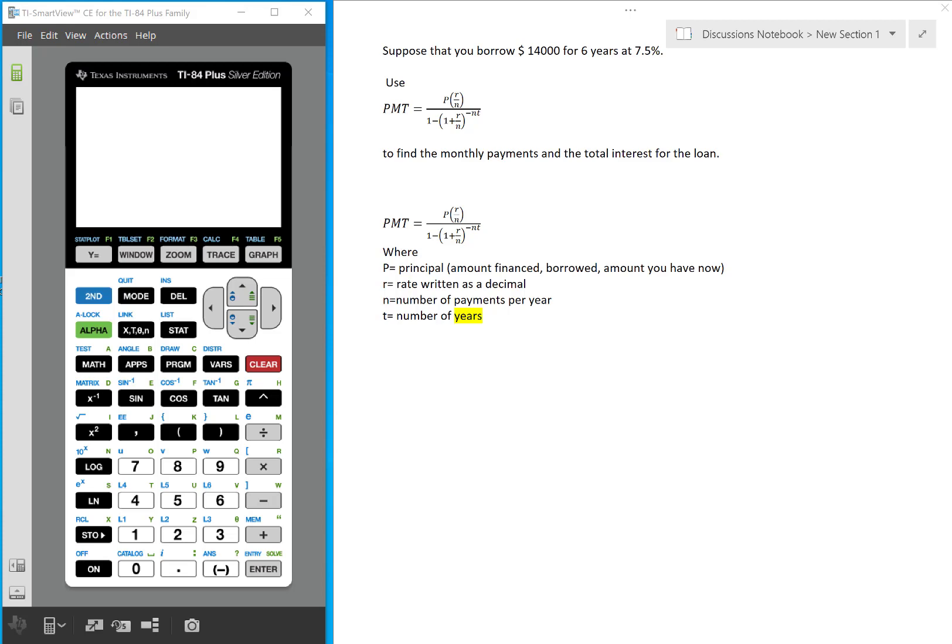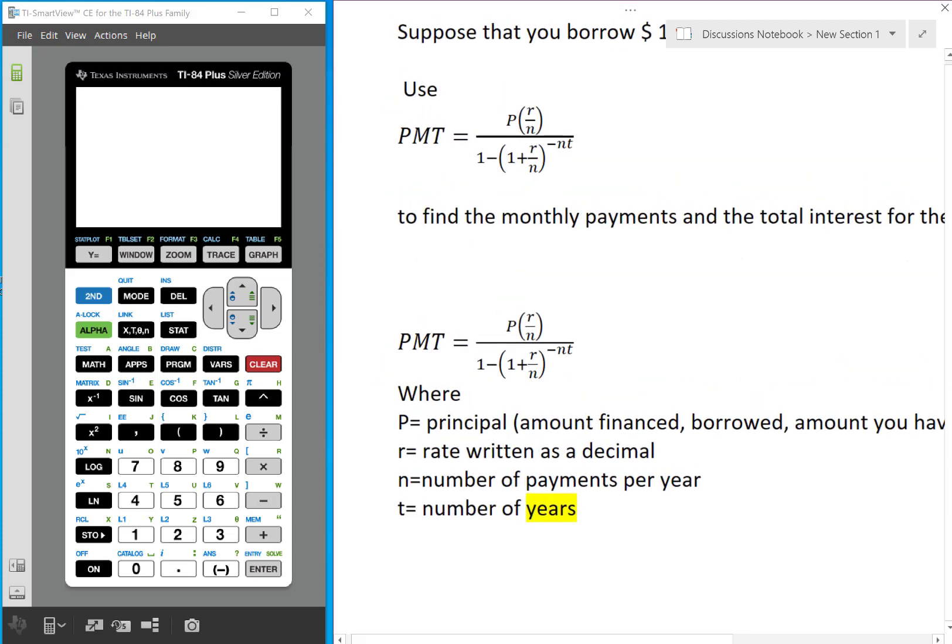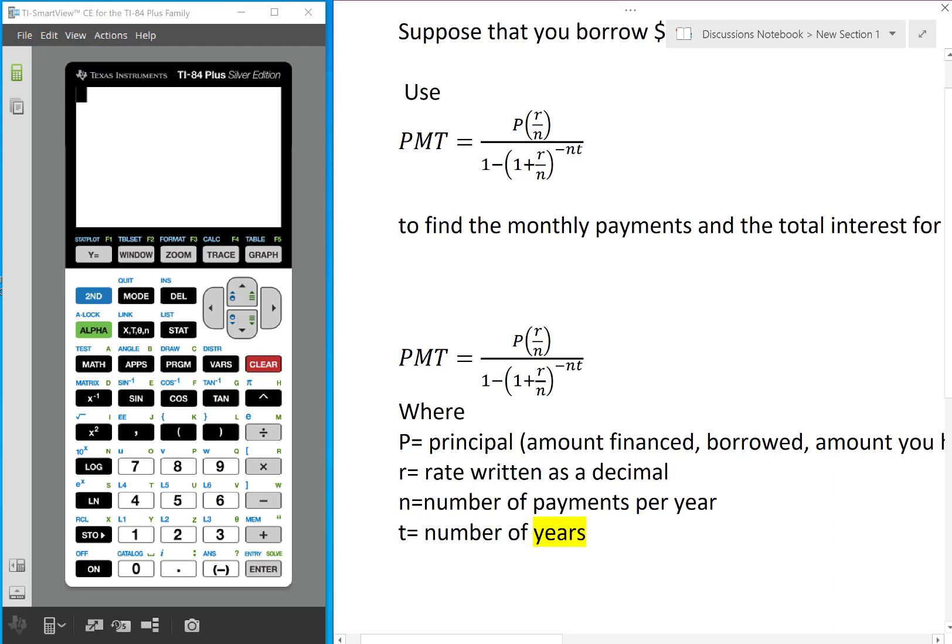Use the formula PMT equals P times R over N, everything over 1 minus 1 plus R over N, quantity raised to negative NT.